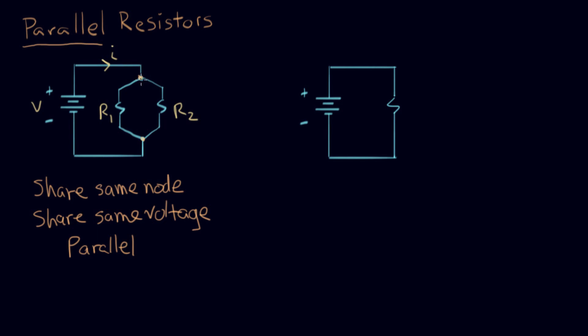When the current reaches this node, it's going to split into two different currents. We'll call that one I1 because it goes through R1, and we'll call this one I2 that goes through R2.